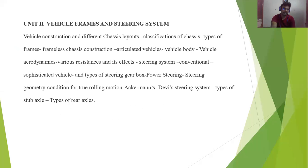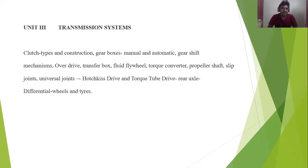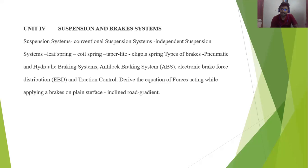In unit two you will be studying frames and steering systems — chassis layout, steering system, types of steering gearbox, and steering linkages. In unit three, the transmission system, you will study gearbox, manual transmission, and automatic transmission — fully based on transmission systems. Unit four covers suspension and braking systems, including ABS, EBD, and other recent technologies.